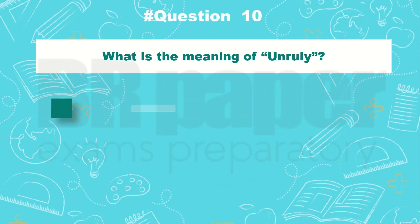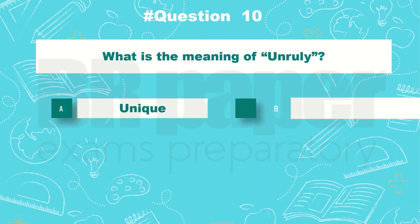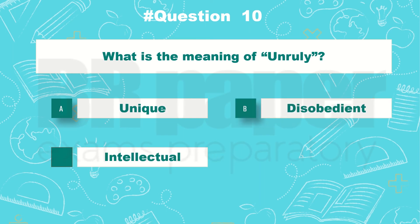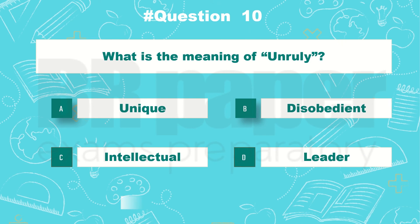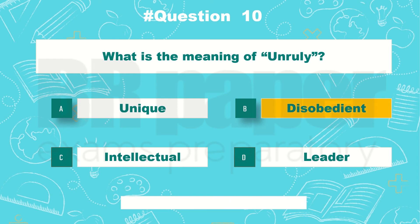Question 10: What is the meaning of unruly? Correct answer: B, disobedient.